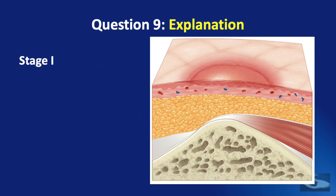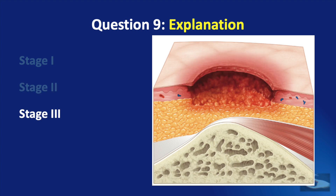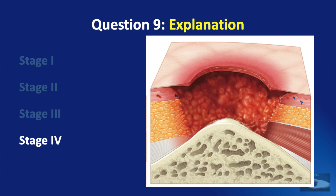In stage 1, there is intact skin with non-blanchable redness of a localised area usually over a bony prominence. In stage 2, there is partial thickness loss of dermis presenting as a shallow open ulcer with a red-pink wound bed without slough, or it may present as an intact or open ruptured serum-filled blister. In stage 3, there is full thickness loss; subcutaneous fat may be visible but bone, tendon, or muscle is not exposed. Stage 4 is full thickness tissue loss with exposed bone, tendon, or muscle.